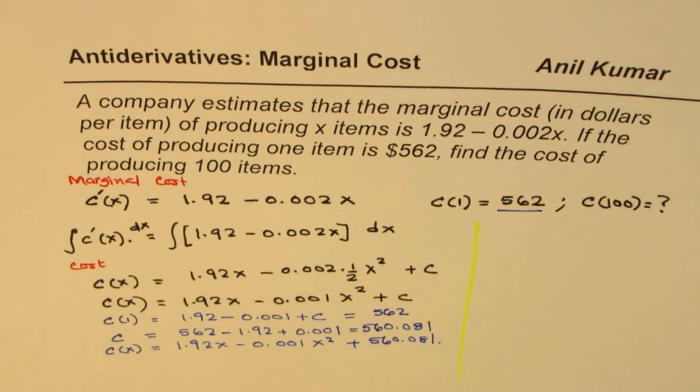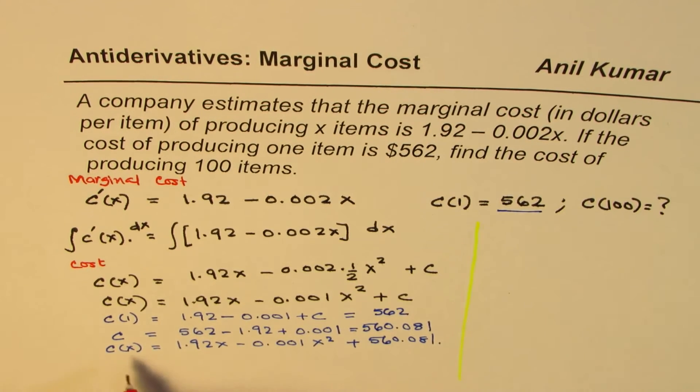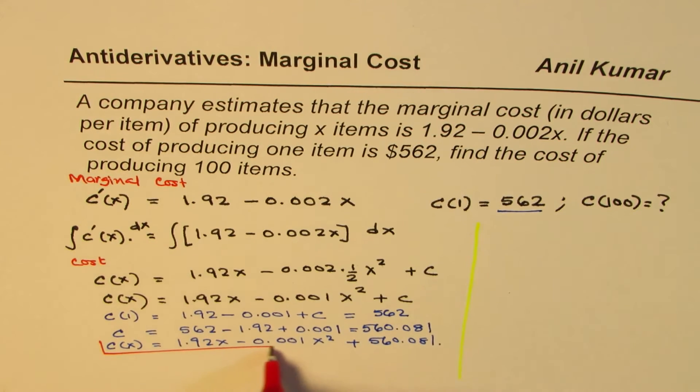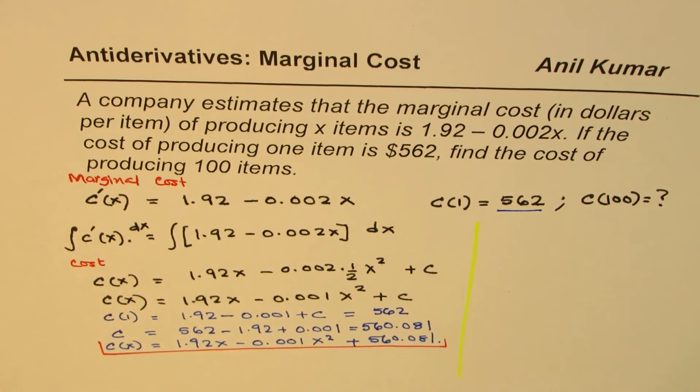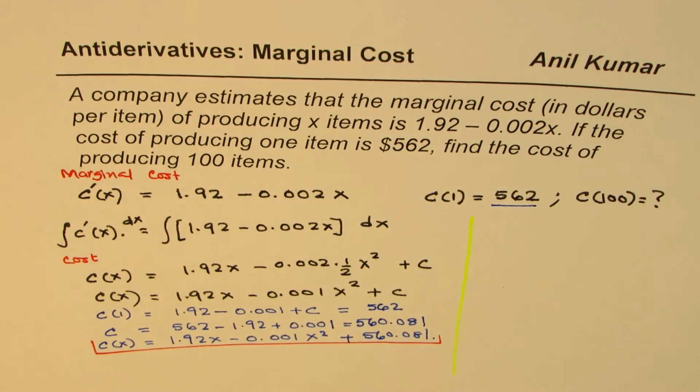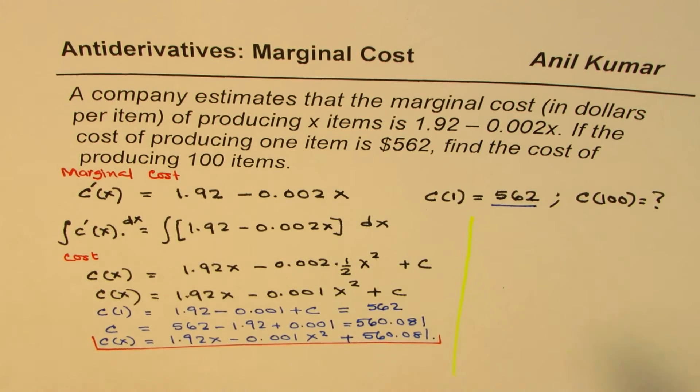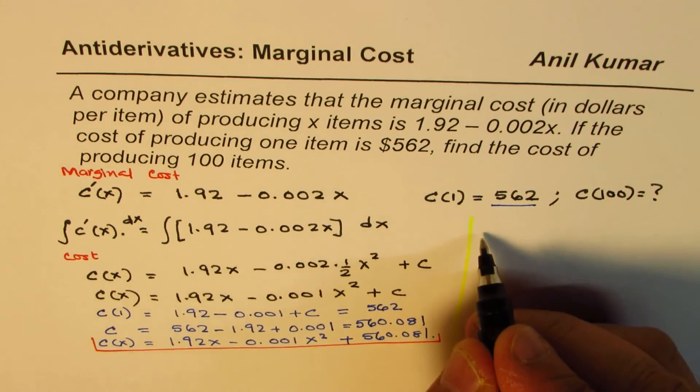So we have our cost function. We can use this to find the cost for 100 items. Let me rewrite this here. Cost of 100 will be, we substitute 100 here.